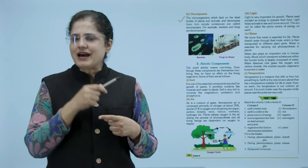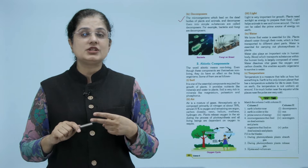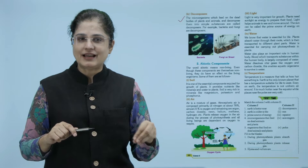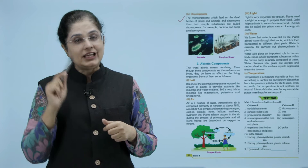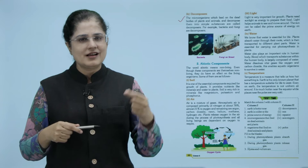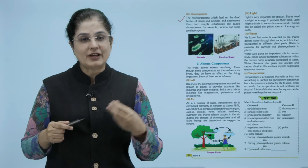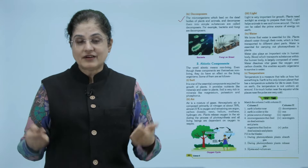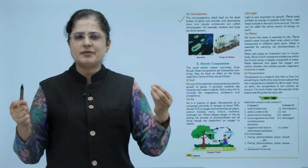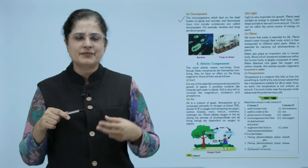Along with living things, there are many non-living components in our surroundings or environment whose effect falls on living things or which help them - these are called abiotic components. These include soil, from which plants get minerals, nutrients, and water to grow. Then there is air - whether it is carbon dioxide, oxygen, nitrogen, water vapor, or various other gases found in air.